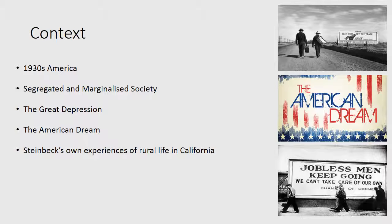Poverty, starvation and massive unemployment meant that the dream was unattainable, and things were even worse for marginalized members of society, such as African Americans, women, and people like Lenny who suffered from intellectual disabilities. They were segregated from society, and we see this as the text progresses through Crooks, the African American stable hand who was segregated to his own room, and also Candy due to his age and weakness.